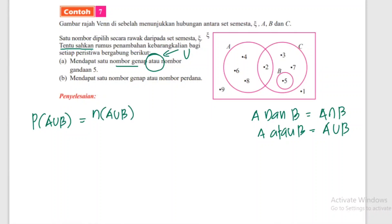Kebarangkalian A union B sama dengan bilangan A union B bahagi dengan ruang sampel. A union B bermaksud semua A dan semua B. A kita ada 2, 4, 6, 8 - nombor genap. B adalah 5.